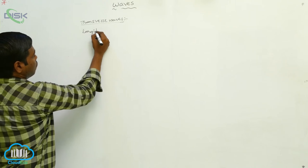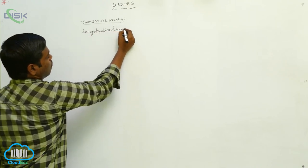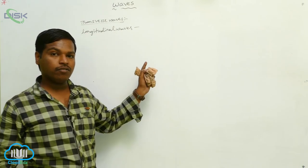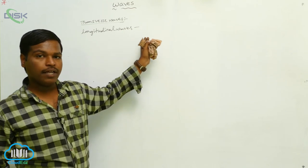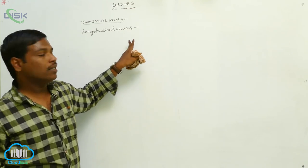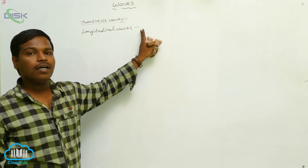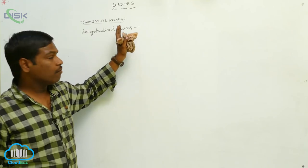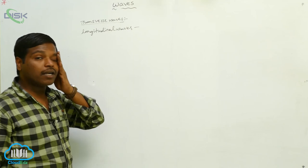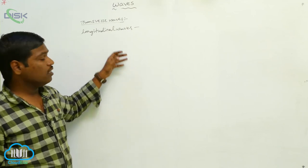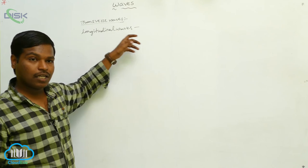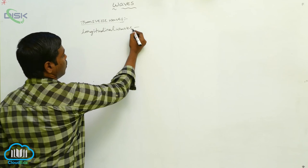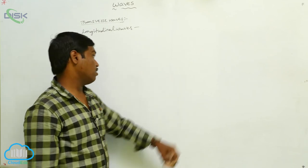Next, longitudinal waves. In longitudinal waves, when the wave is traveling in a medium, the particles of the medium travel along the same direction as the wave. That is called longitudinal waves. The particles travel along with the wave — along the same direction. For explanation of this, consider a string.